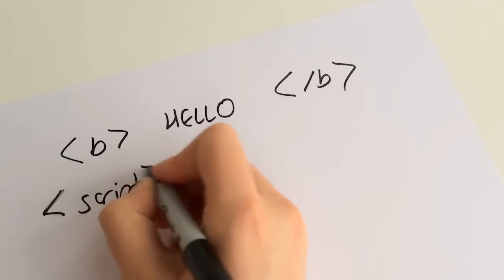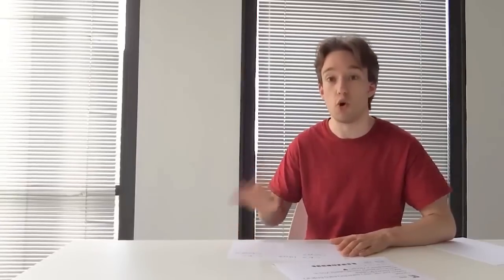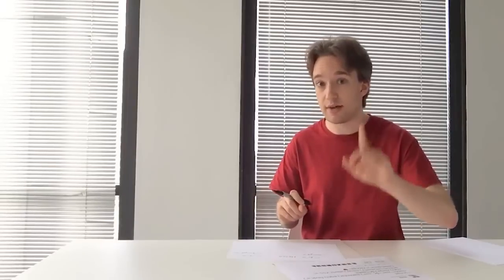And you also have a special tag called script. Script is special. Script says what's between here shouldn't be shown to the user at all. It's not text to be seen. It's not an image. It's programming code. It's stuff that the web browser, Firefox, Chrome, Internet Explorer, should run. But there is a rule. A really important rule. And it's how you avoid an attack called cross-site scripting.